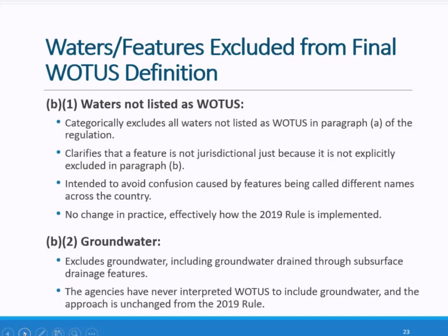The first exclusion is intended to provide clarity: if a water is not covered under the four categories of jurisdictional waters, then it is excluded from the definition. This is consistent with how prior definitions of waters of the U.S. have been implemented. For the second exclusion, the agencies are clarifying that groundwater, including groundwater drains through subsurface drainage features such as tile drains, is not a water of the United States. This is consistent with the long history of WOTUS — the agencies have never interpreted the definition to include groundwater.